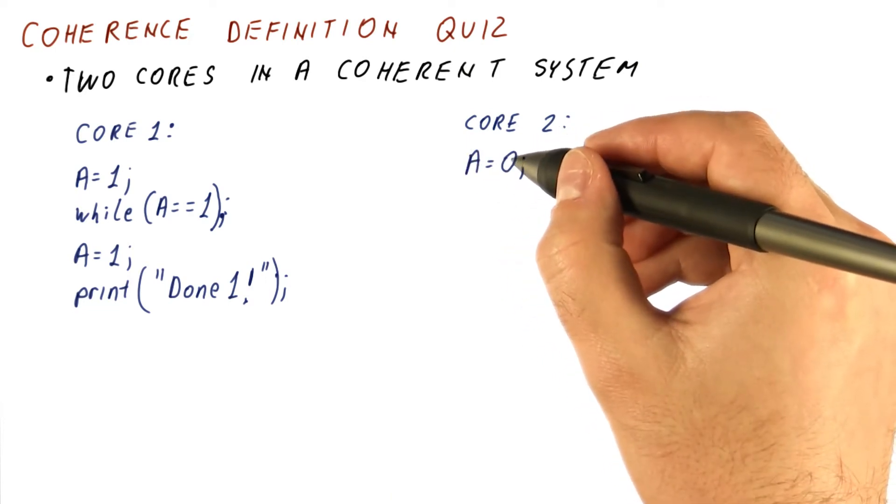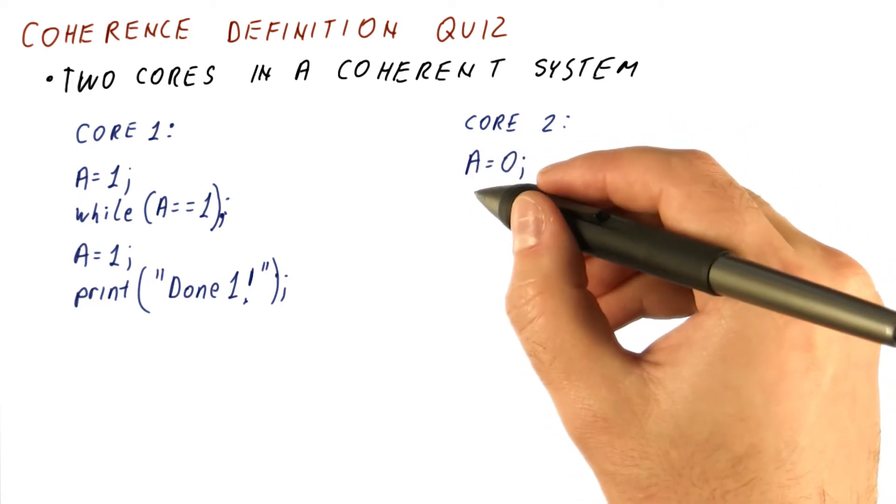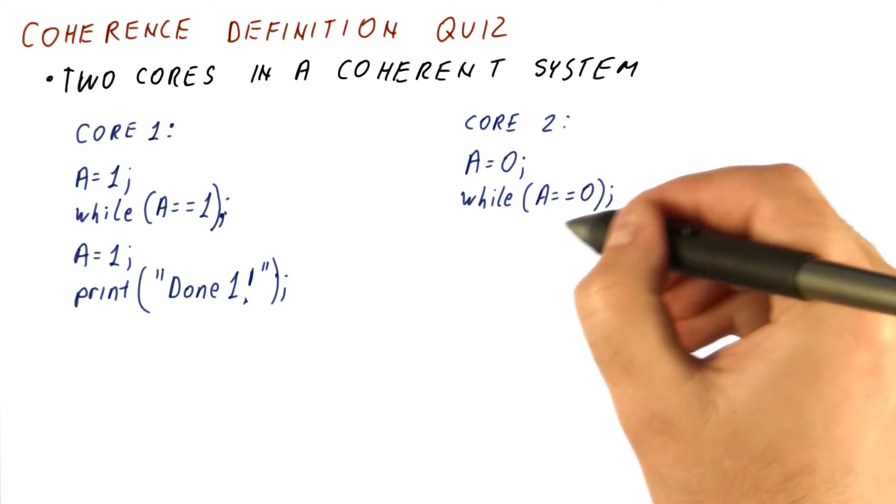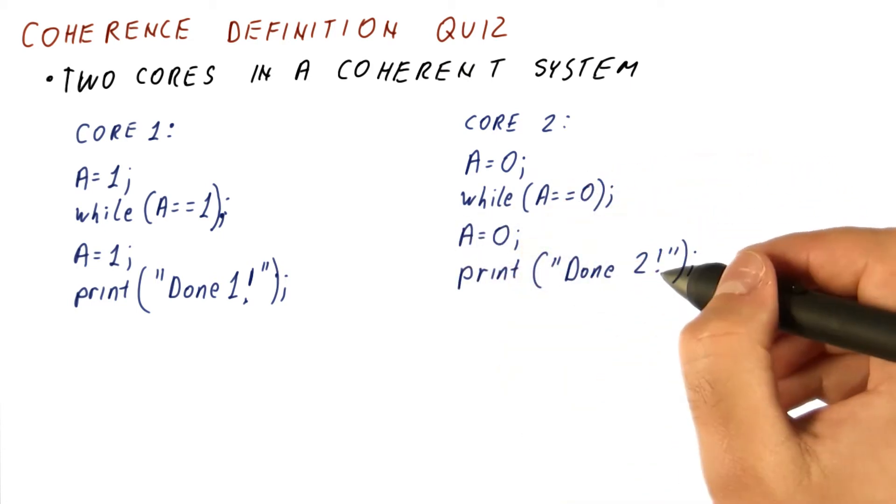At the same time when core one is started on this, core two starts on another program that writes zero to the same location A in shared memory, waits until A changes from zero, sets A to zero again, then prints done two.